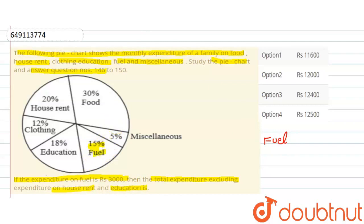15%. It means that 15% is given for fuel, which equals Rs. 3000. Expenditure on fuel is Rs. 3000. Okay?